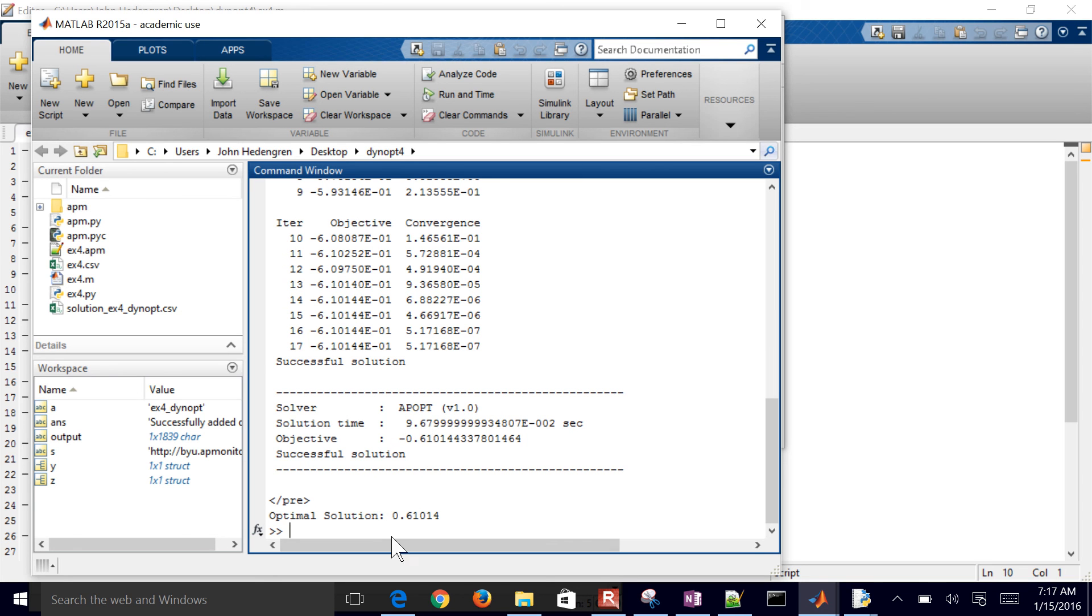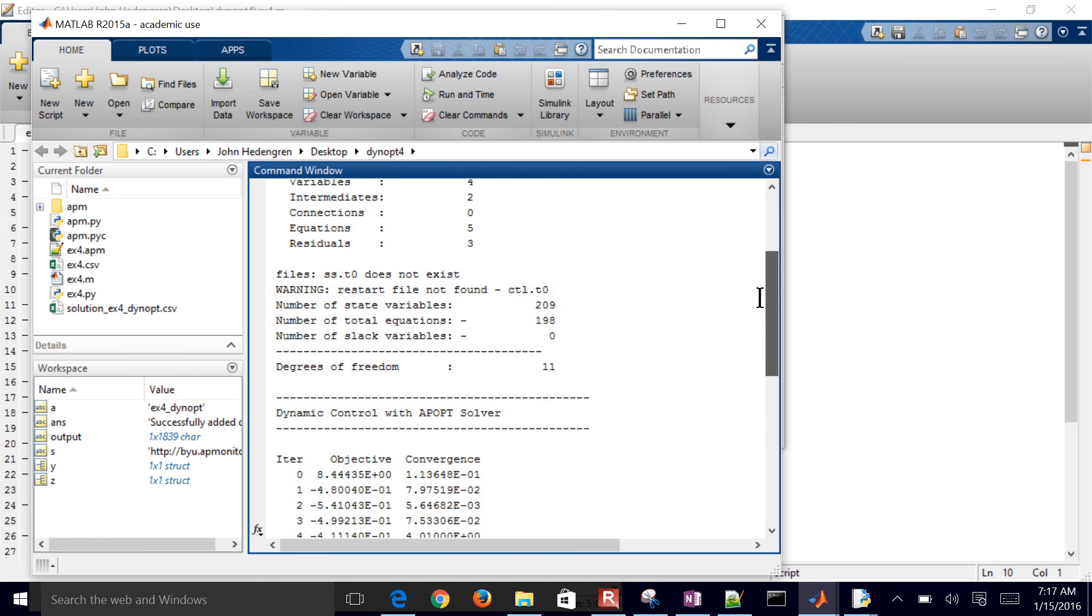And there you can see the objective. So I was trying to maximize B. There's my optimal solution. And you can see just a little bit more about the problem statistics.